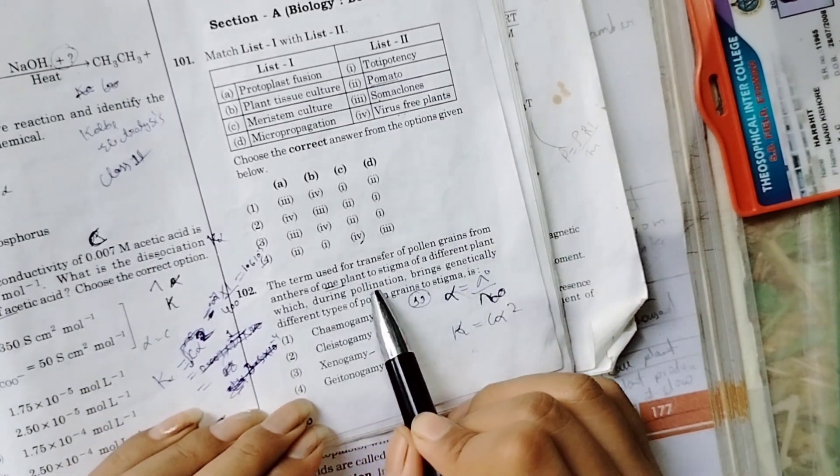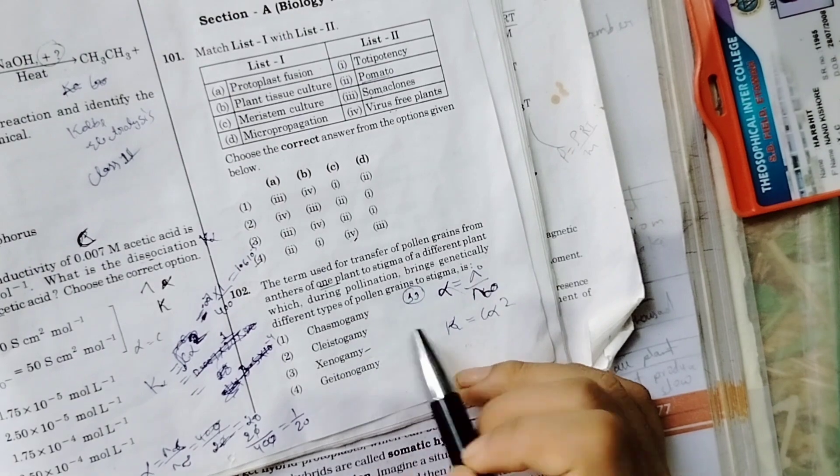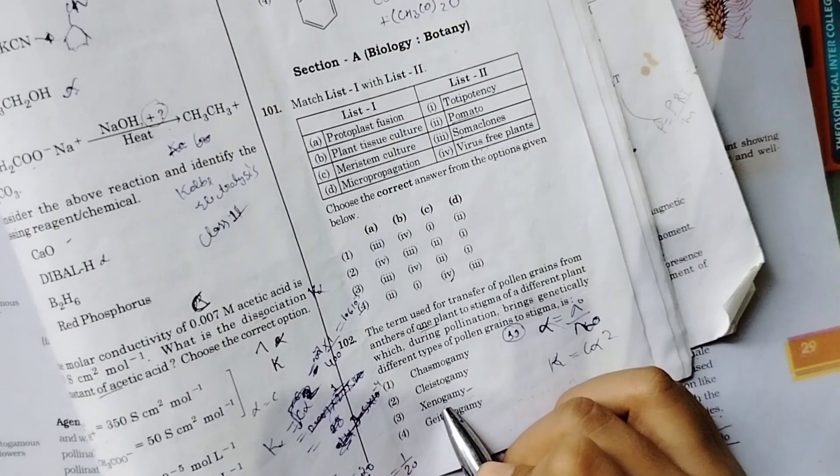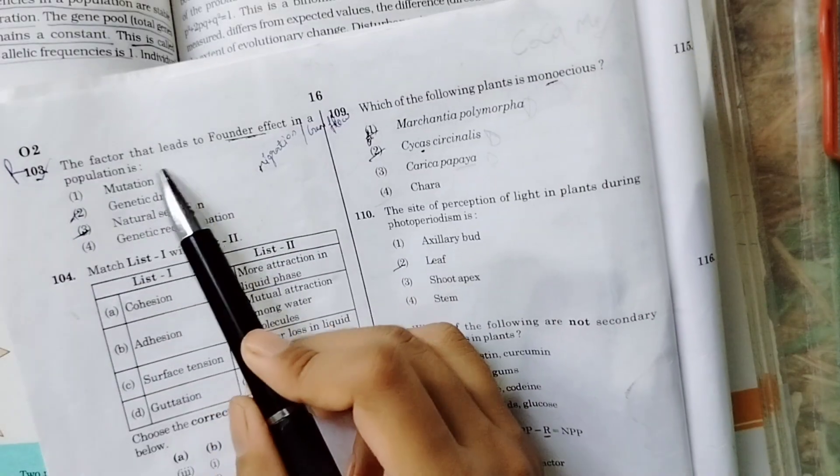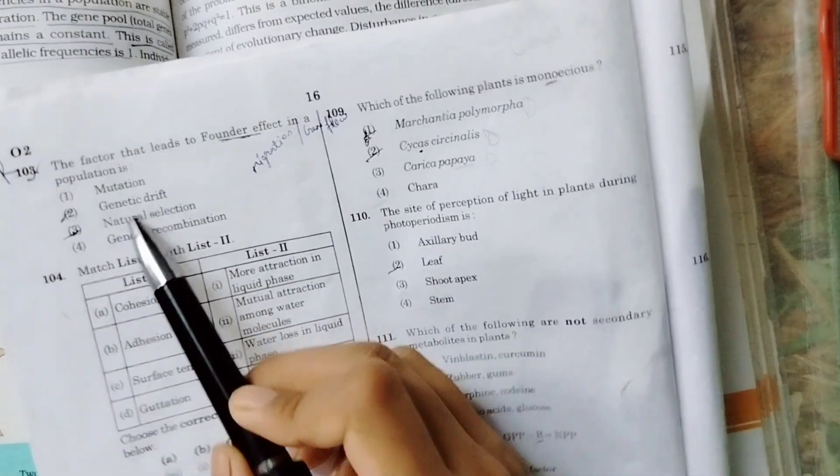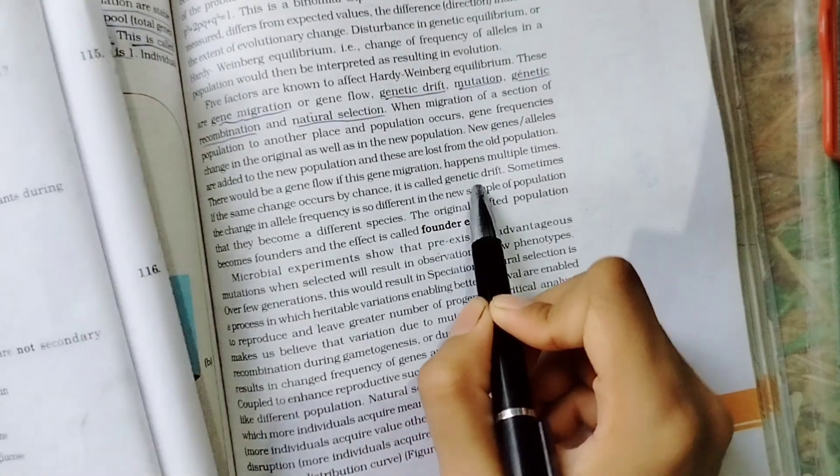The term used for transfer of pollen from anther of one plant to stigma - this process is geitonogamy. Genetically different types of pollen grains. Factor that leads to founder effect in a population is genetic drift. Founder effect because of genetic drift.